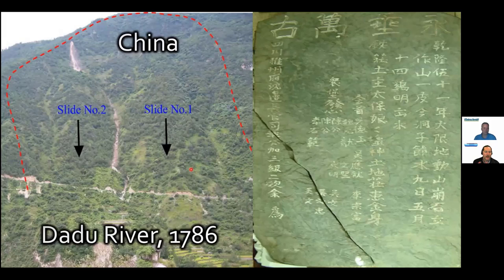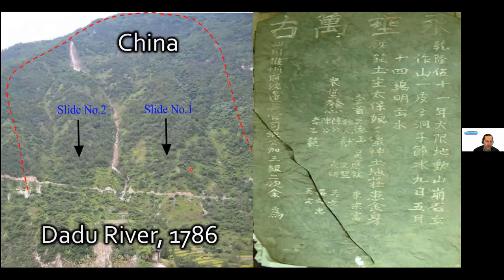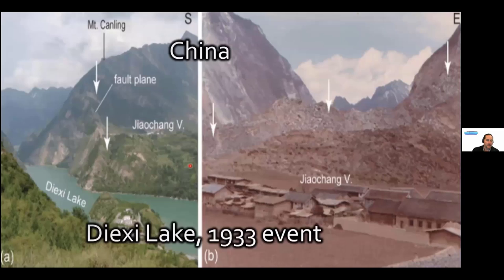Now we're into recorded history. There's evidence from about 2,000 years ago in China of one of the biggest landslide dams ever failing — probably with massive loss of life, but no record exists. In 1786, another one resulted in over 100,000 deaths — that is in recorded history. Then in 1933 in China, another event had about 2,500 deaths associated with it. So these events are quite catastrophic.